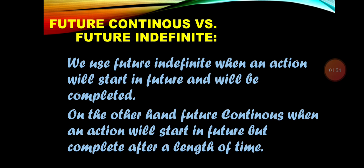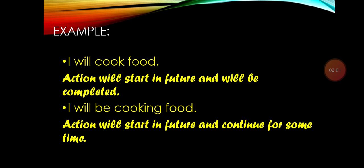Let's take an example: 'I will cook food.' Here we are talking about an action that will start in the future and will be completed. The next sentence, 'I will be cooking,' is a Future Continuous sentence, showing that the action will start in the future and continue for some time.